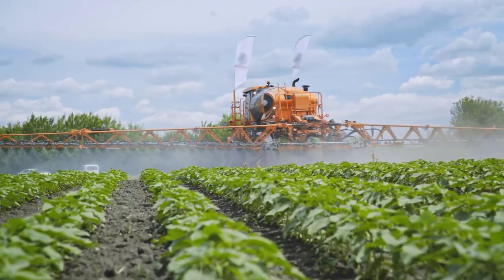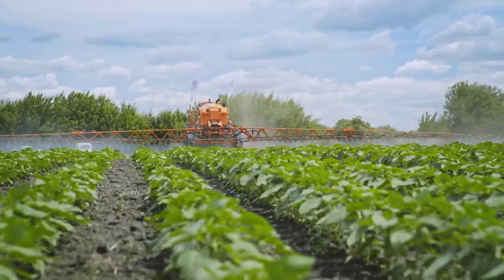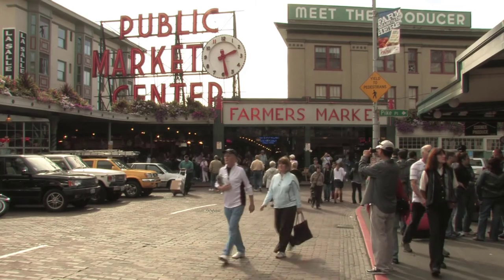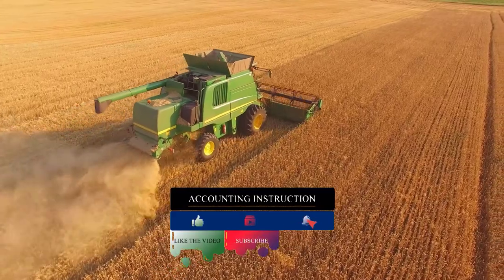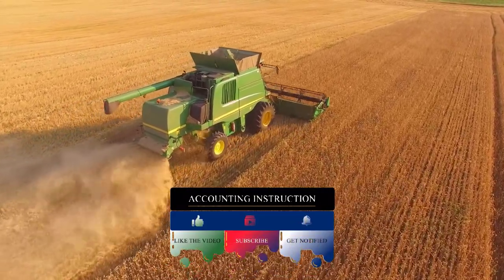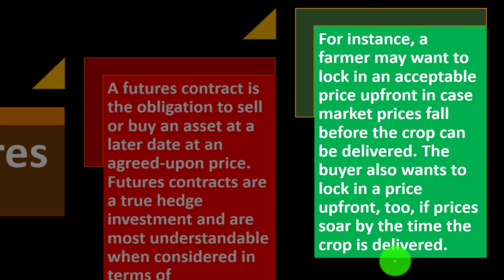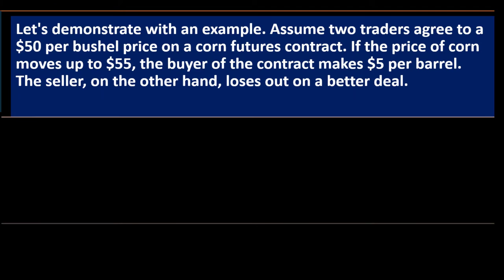A farmer invests significant capital into a crop, and by the time it reaches market the price may have changed. Using a futures contract allows them to hedge against price drops. The buyer also wants to lock in a price upfront in case prices soar. For example, assume two traders agree to a $50 per bushel price on a corn futures contract. If the price moves up to $55, the buyer makes $5 per bushel while the seller loses out on the better deal.